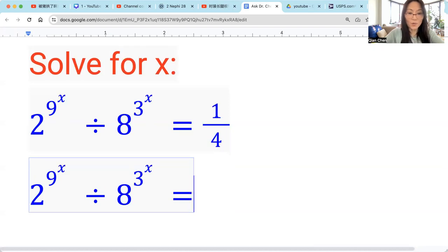1 over 4 is 4 raised by negative 1, right? And 4 is 2 squared. So 2 raised by square, then raised by negative 1. That's 2 times negative 1, which is negative 2.